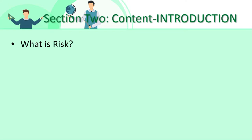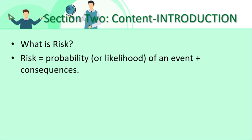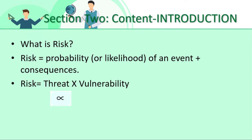Risk can be defined as a combination of probability of an event and its consequences. Whenever there is a probability of an event happening, plus because of that event there are consequences, then risk comes into the picture. There is one more important definition of risk: when there is a threat coupled with vulnerability, then risk comes.